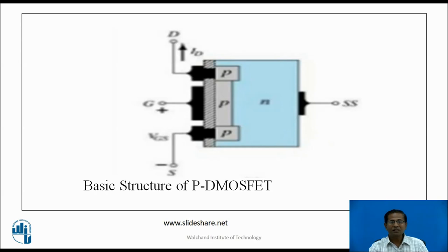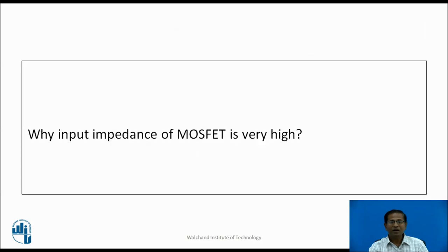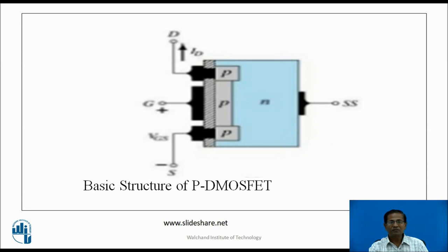This is the basic structure of P-channel D-type MOSFET. It is a lightly doped N-type semiconductor material in which two heavily doped P regions are diffused, represented as drain and source. In between the two P regions there is a connectivity made up of P-type material — that's why the name is P-channel D-type MOSFET. The input impedance of MOSFET is very high because the gate is isolated from the channel by a thin oxide layer with no direct electrical connection between them. Generally, the input impedance is in the range of 1 megaohm.